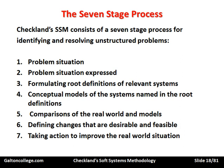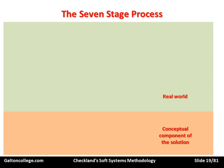This seven-stage process can be looked at in terms of two domains: the real world at the top, and a conceptual component of the solution at the bottom. We start by recognising a real-world problem situation. What is the system? How complex is it? Why is it messy? Who is involved? How is it done? Try to get some understanding of the complexity of the system.